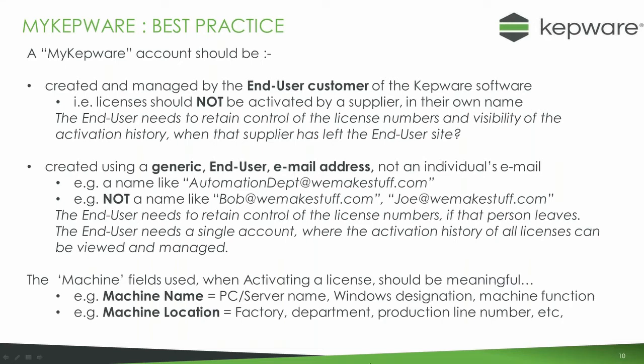It's also important when activating the license to use meaningful names for the machine fields. The machine name should be something like the PC or server name, the Windows designation, or perhaps the function of the machine within the site. The machine location should be the factory, the department, or the production line at the site. This makes the activation history more meaningful when you're viewing it.